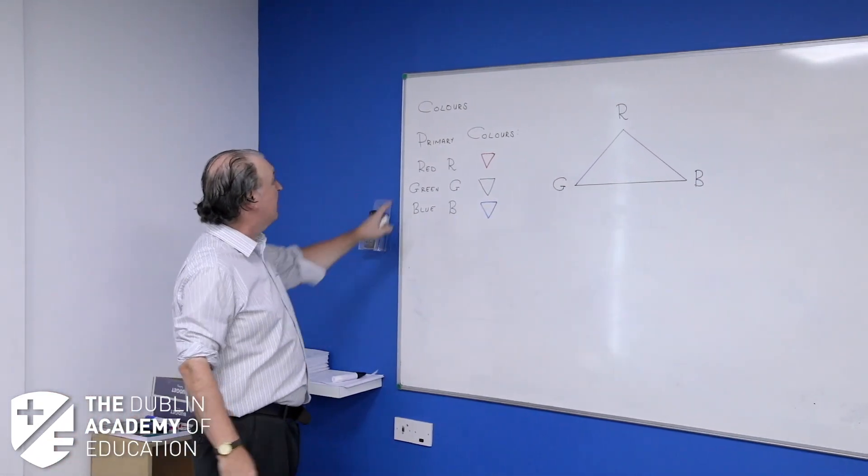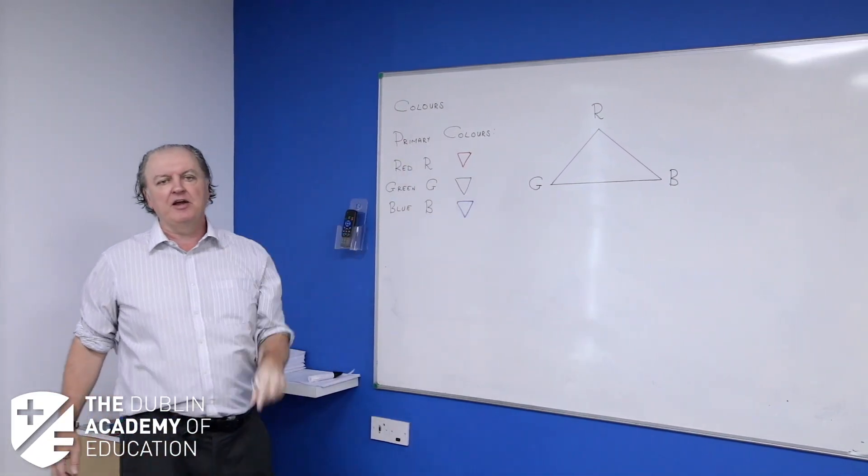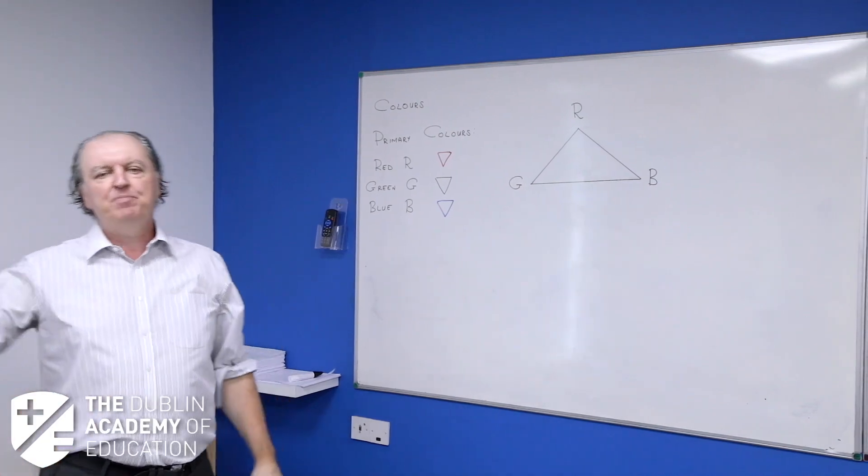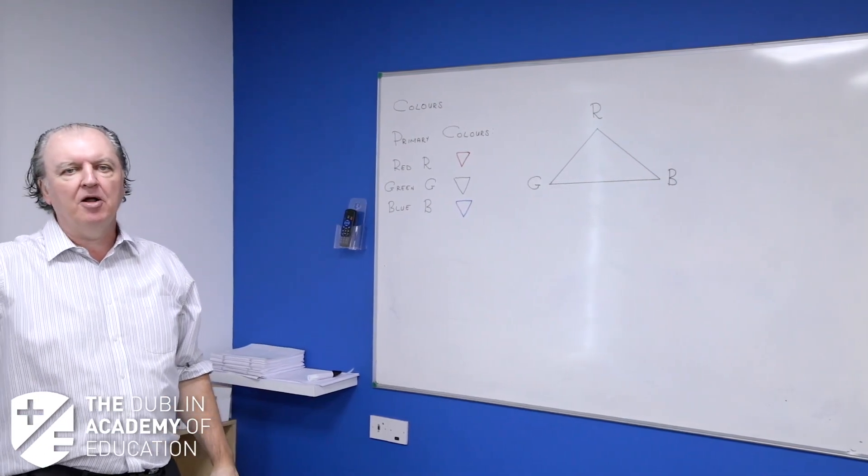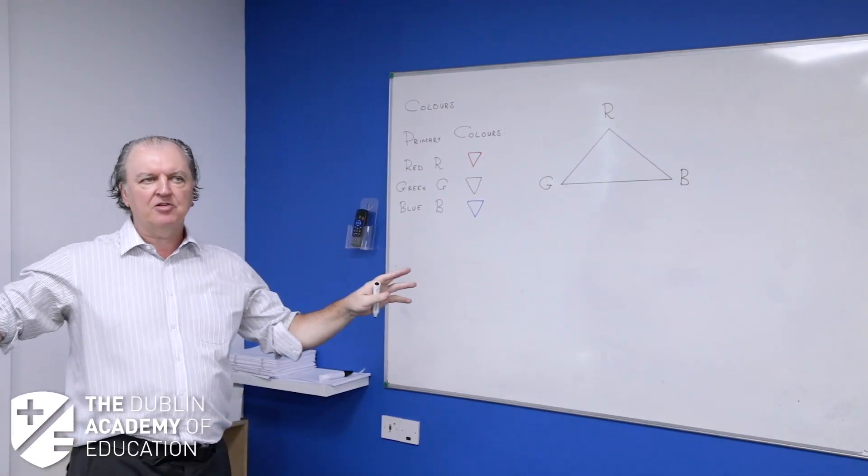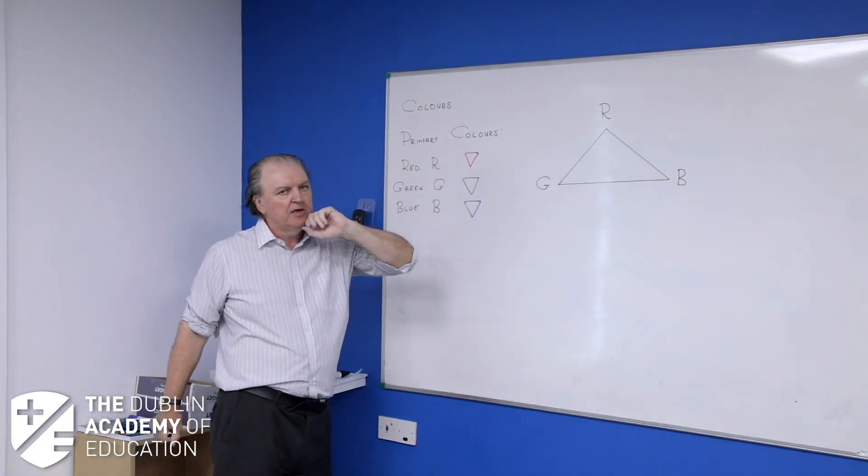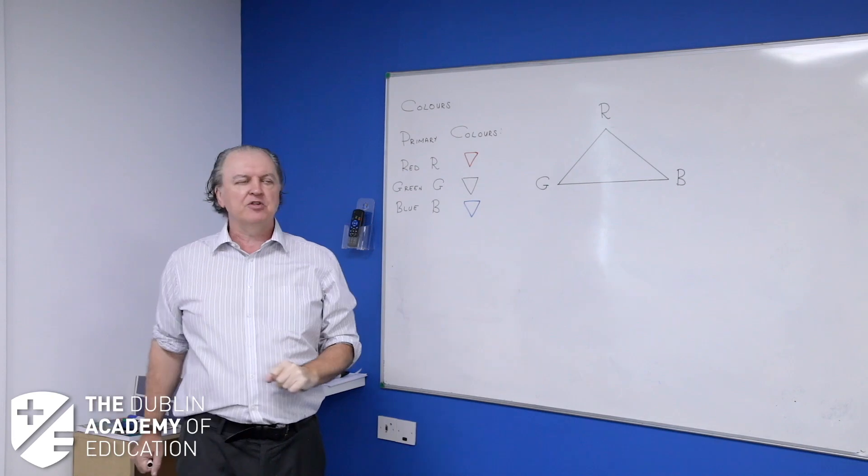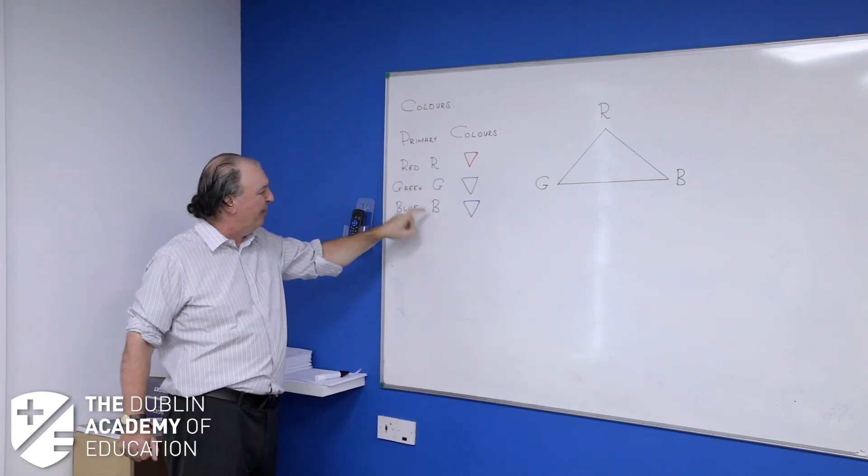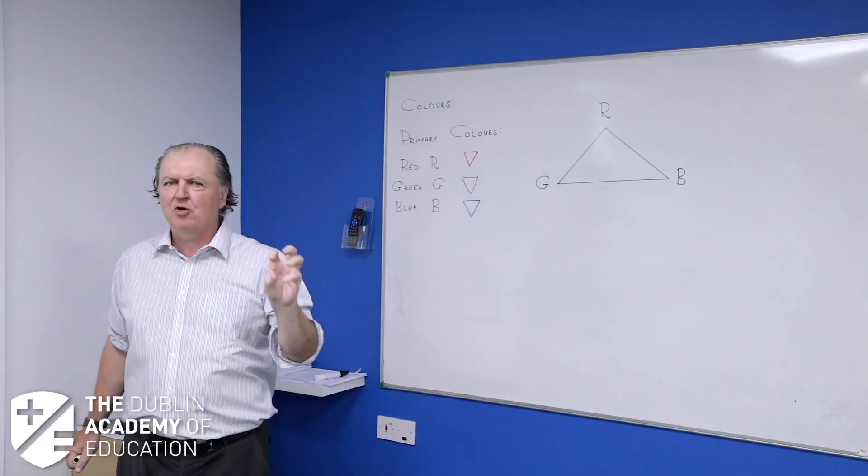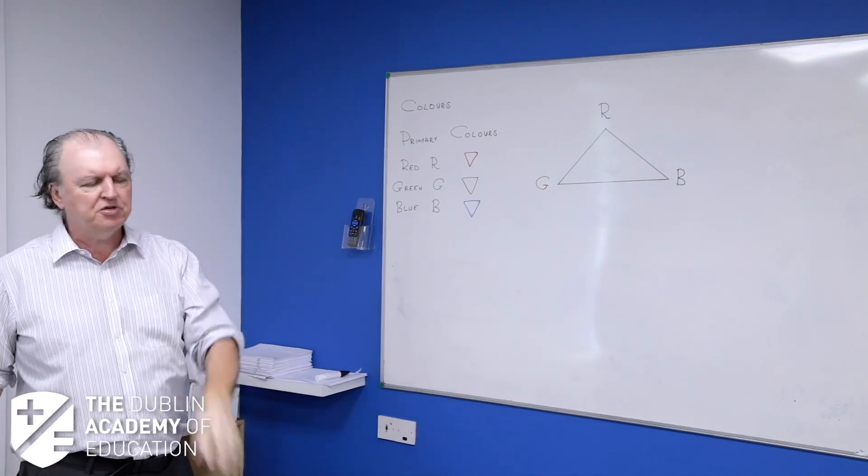Well, we have what I call the primary colors of light. If you do painting, the primary colors mean something else. We're not going to get into that. This is the primary colors of light. There are three primary colors of light. They are red, green, and blue. You've seen that for RGB on your computers.